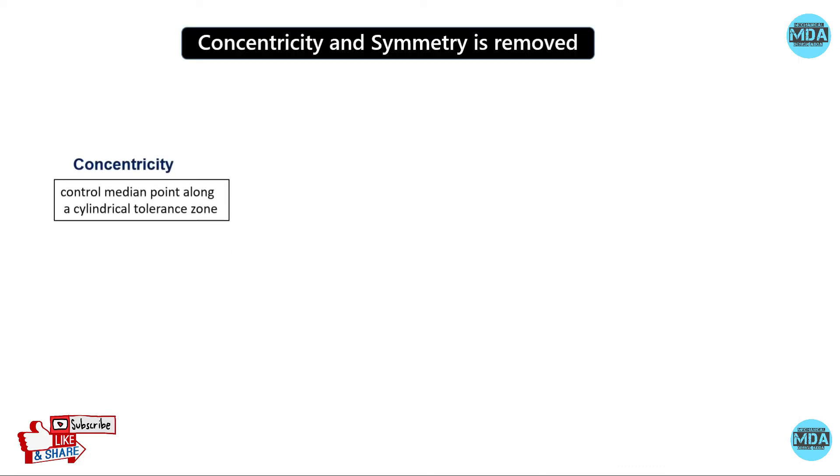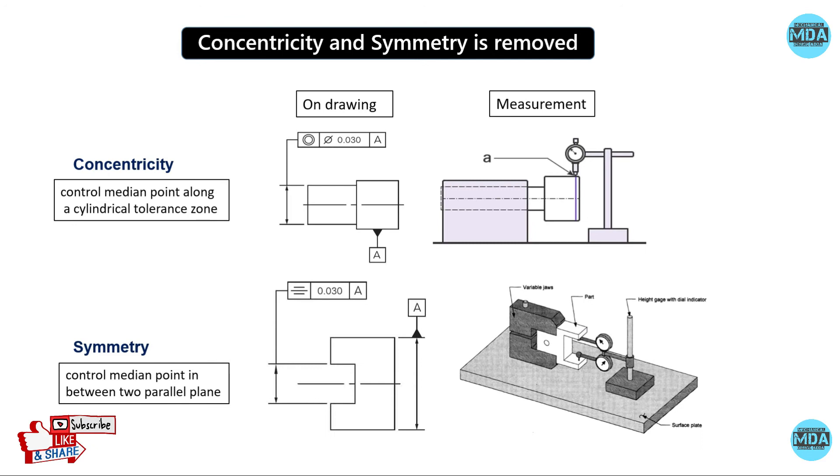So why are concentricity and symmetricity symbols removed? Other symbols provide direct control to the feature than symmetricity and concentricity. In concentricity and symmetricity, they are controlling the median points which are imaginary, so there is a lot of confusion.